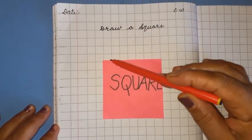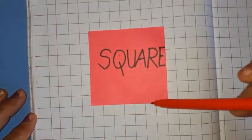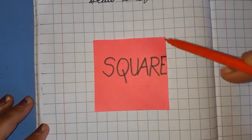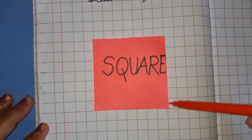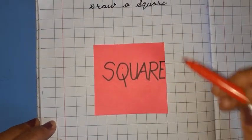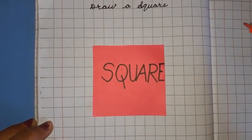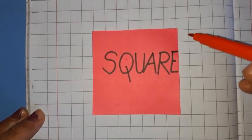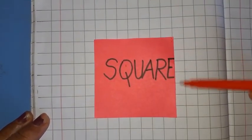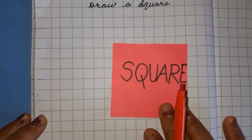A square has four sides: one side, two sides, three sides, and four sides. A square has four equal sides, meaning all four sides are equal in size. A square also has four corners: one, two, three, and four. A square is made using two sleeping lines and two standing lines.